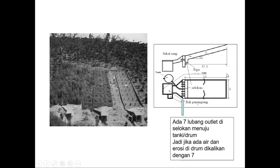Jadi, ini petanya ukurannya adalah 5 meter x 20 meter, dari 100 meter persegi. Kemudian, dikelilingi atau dibatasi oleh seng. Seng ini ada di pinggirnya. Kemudian di ujung petak ini ada selokan, kemudian ada pipa 1 dari 7, yang satu masuk ke dalam tangki besar, yang satu masuk ke dalam bak ini. Ini juga dilengkapi dengan automatic water level recorder yang ada di bak ini. Jadi, kita tahu berapa naik turunnya air yang ada di sini.